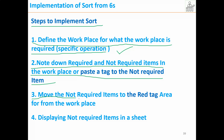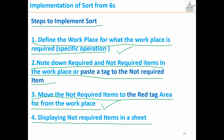The third step is to move the not-required items to the red tag area, far from the workplace. Every company or department will have a separate area called the red tag area — that is where we store unwanted items. Once we identify the not-required items in the work area, we move those unwanted items to the red tag area.